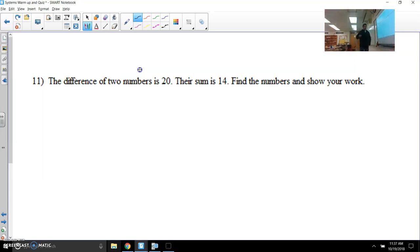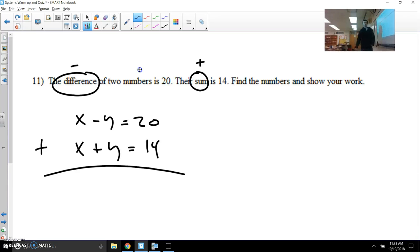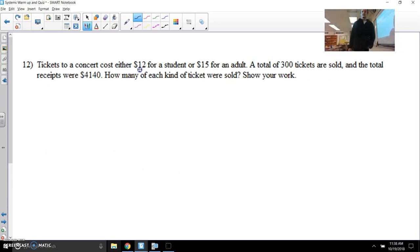The difference of two numbers is 20. The sum is 14. Find the numbers and show your work. You've got to know that difference means subtraction and you've got to know that sum means add. You've got to set these two equations up based on what it's talking about. The difference of two numbers is 20. The sum of two numbers is 14. Then you can use elimination and add them together to cancel out and get x equals and y equals.